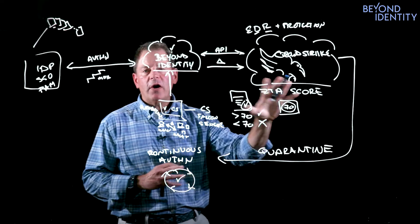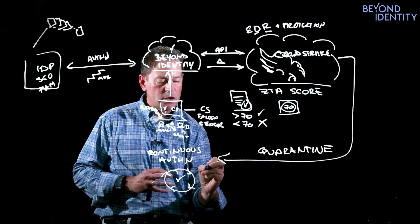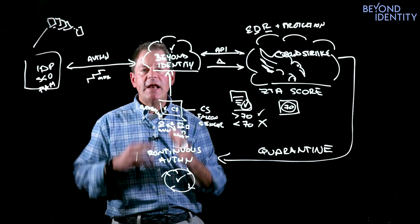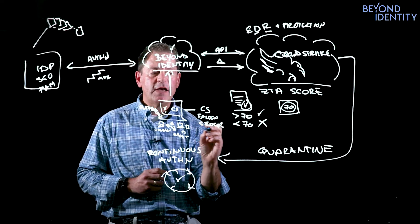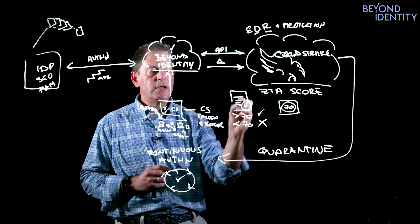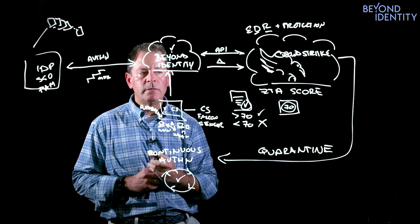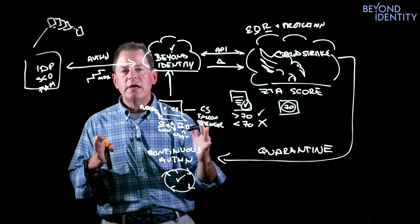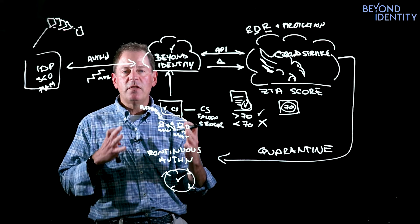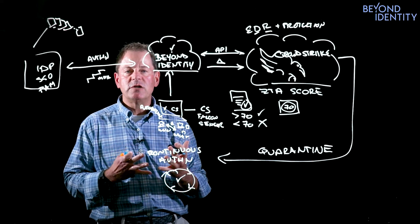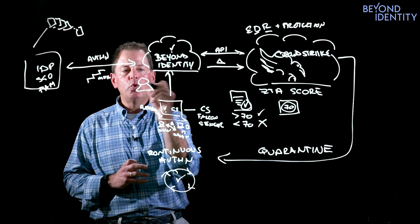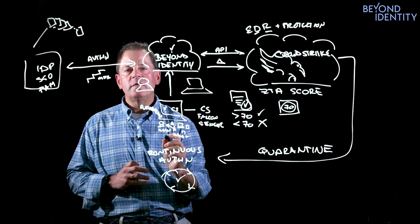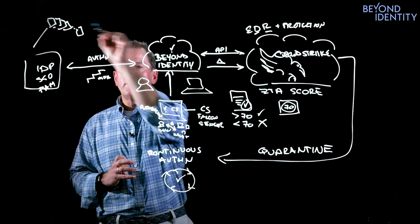So it no longer has access to these resources requiring re-authentication by Beyond Identity before enabling that user to get back. And we will not accept authentication unless whatever changed is brought back within policy. So together, CrowdStrike and Beyond Identity provide the essential ingredients and foundation for zero trust to truly understand and assess who and what is gaining access to your most critical resources.